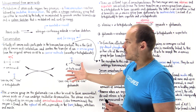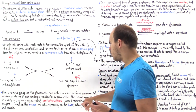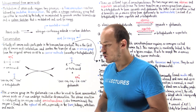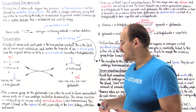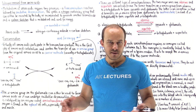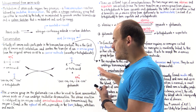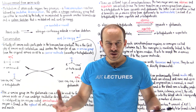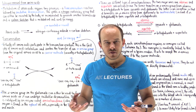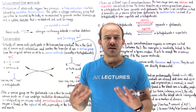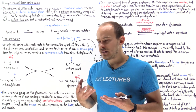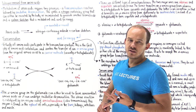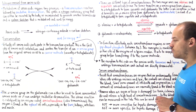The enzymes that catalyze this transamination step are called transaminases, also known as aminotransferases — aminotransferase and transaminase refer to the same exact enzyme. These enzymes are found in the cytosol of cells, and we find them predominantly in cells of the liver, the kidney, the intestines, and in skeletal and cardiac muscle tissue.